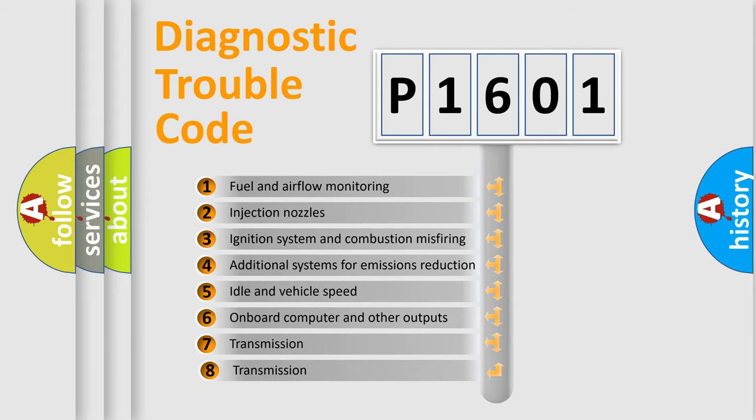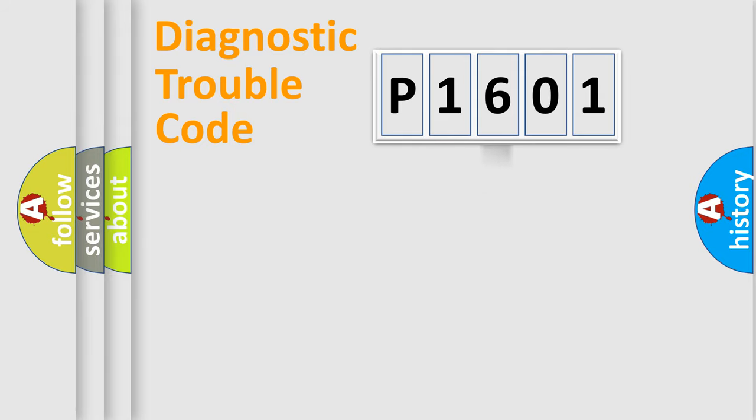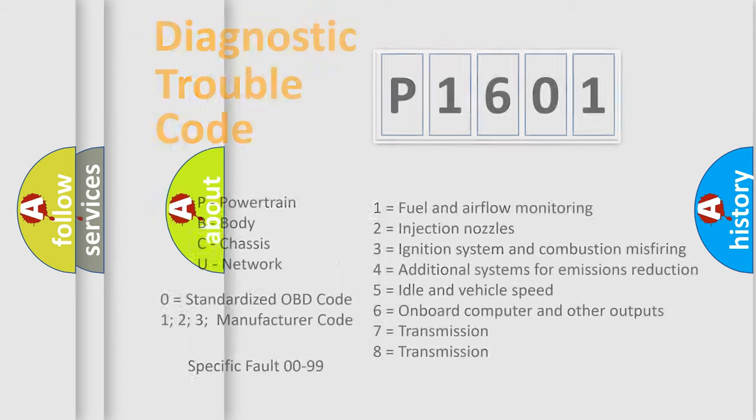The third character specifies a subset of errors. The distribution shown is valid only for the standardized DTC code. Only the last two characters define the specific fault of the group. Let's not forget that such a division is valid only if the second character code is expressed by the number zero.